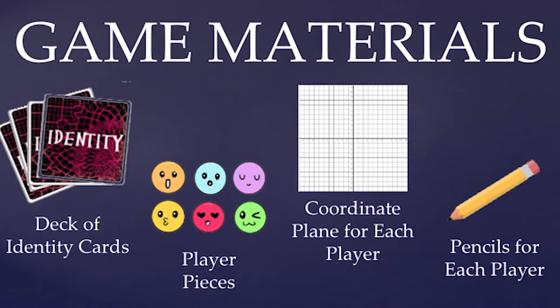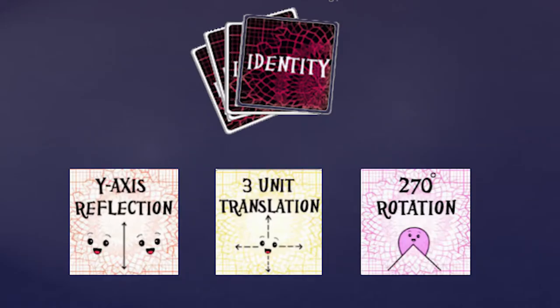To play, you'll need a game piece, a coordinate plane, and a pencil for each player. You also need a deck of identity cards. There are three different types of identity cards: reflection cards, rotation cards, and translation cards.